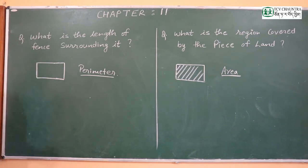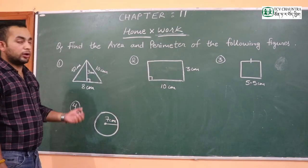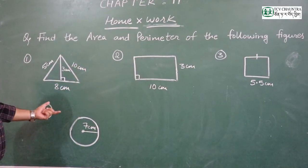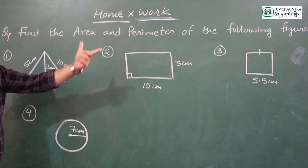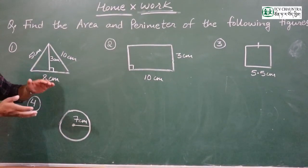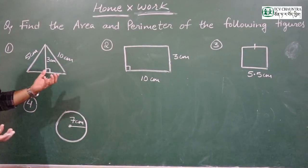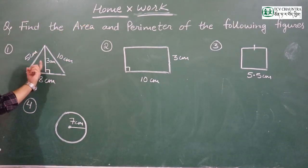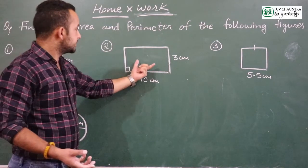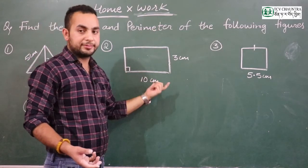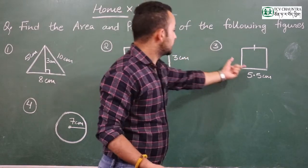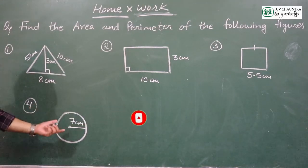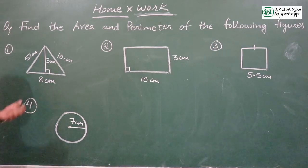Now, based on two-dimensional figures, I'm going to give you some homework questions. You will find the area and perimeter of four different figures — triangle, rectangle, square, and circle. Use the formulas, substitute the given values, and calculate the area and perimeter (or circumference) of each figure. Thank you and have a nice day.